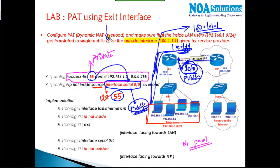This is a common production network implementation where all LAN users get translated to the public IP on the exit interface. This IP is often automatically assigned by DHCP from the service provider and may change, but it doesn't matter — whatever IP is present on that interface will be used to go outside the LAN.